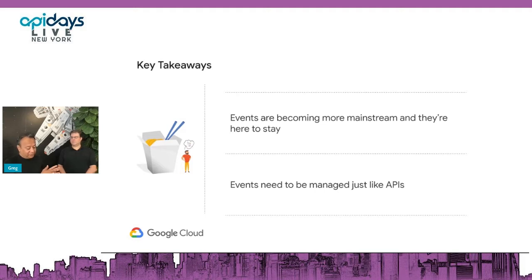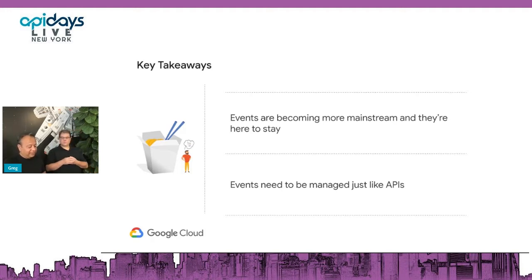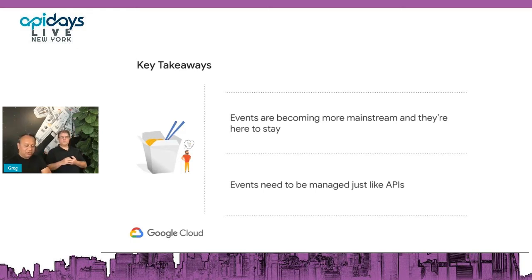But today, as we pivot towards the next generation of API-based applications and products, it's very important to focus on things like digital excellence, and APIs are at the core of it. Apigee has been a market leader. Let's talk more about events now.